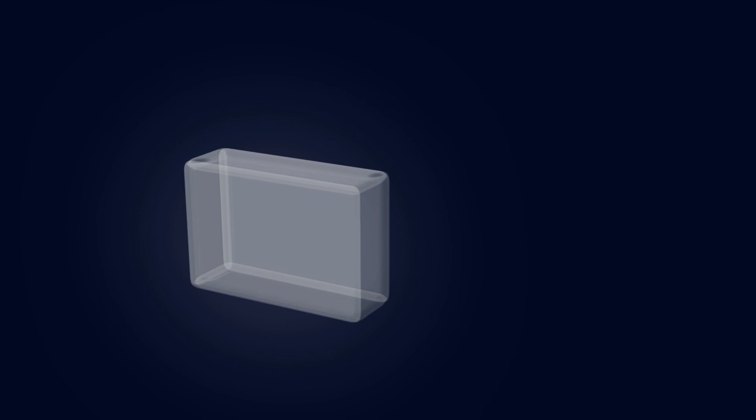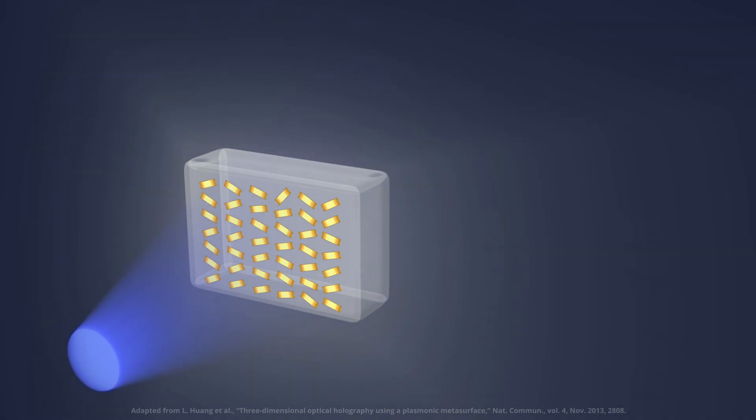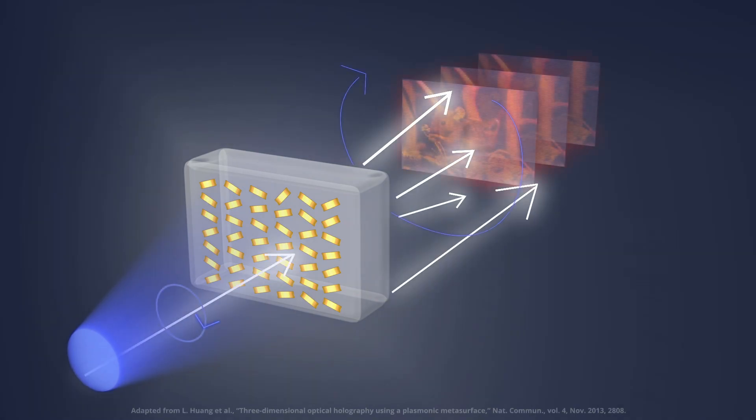For example, metasurfaces composed of glass substrates containing nanoscale metallic or dielectric rods with precise orientations can be used to create a 3D hologram, with each rod acting as a pixel.